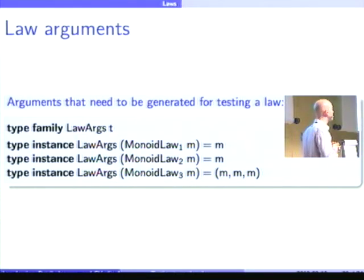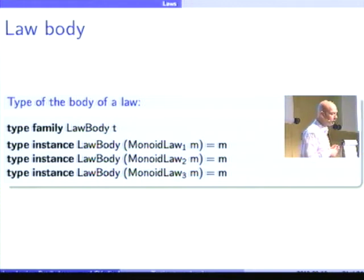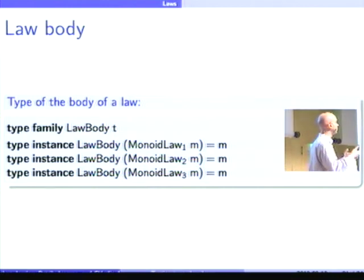So, type family LawArgs takes these three laws and specifies what the arguments are for those laws. So, for the first two laws, I only have a single monoid value. For the third law, I need three monoid values to test associativity. For the LawBody, pretty boring for the monoid case, the type of the resulting expressions are monoid values. So, each of the laws returns a monoid value in a pair of monoid values, actually.